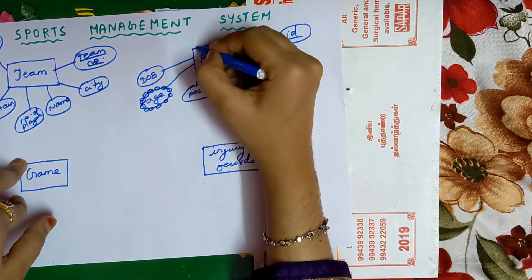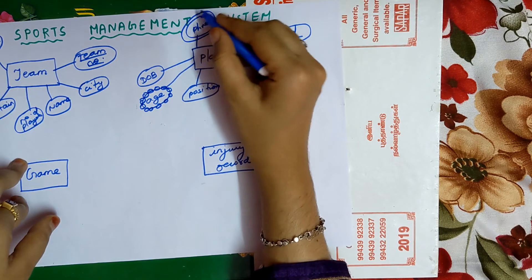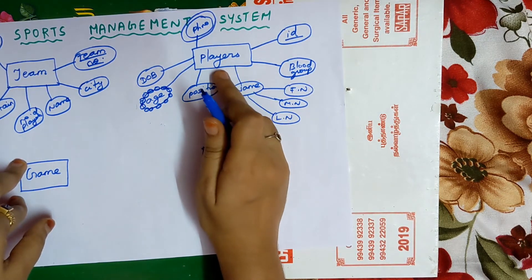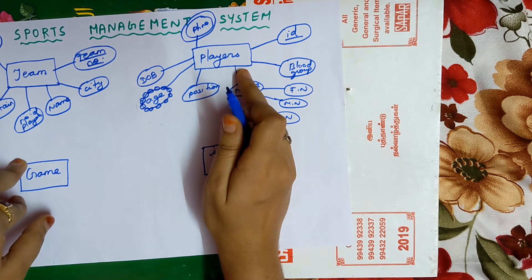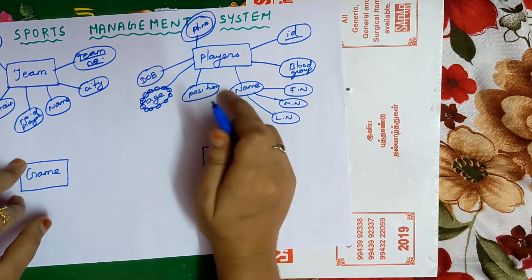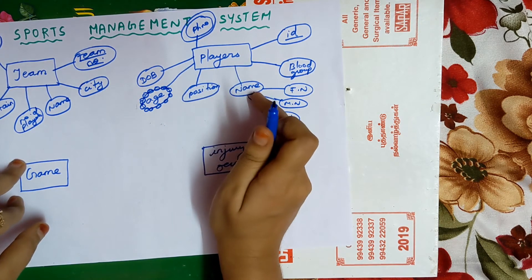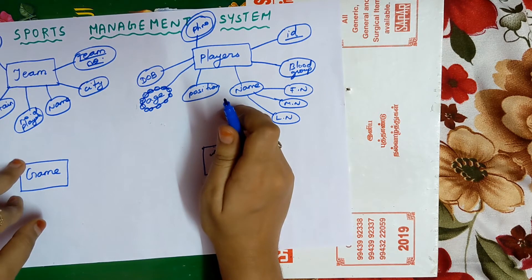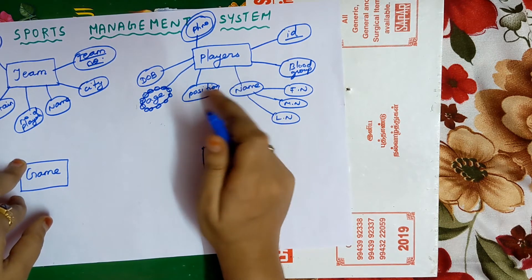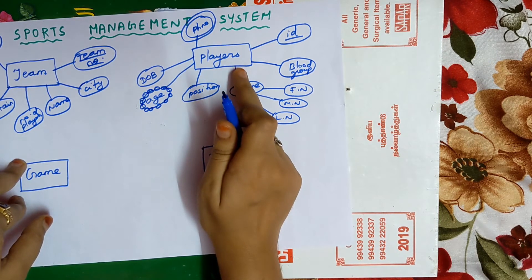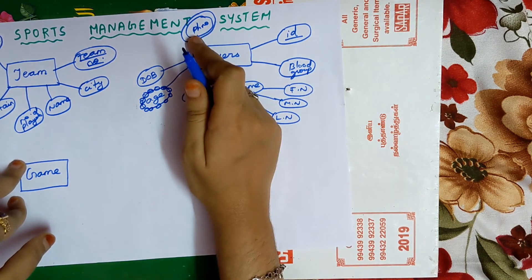The next attribute is phone number of the player, which must be written inside double ovals. It is not necessary that a player has only one phone number — a player can have more than one. So phone number is a multi-value attribute, and therefore it is written in a double oval.